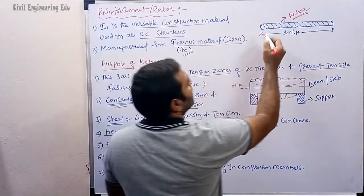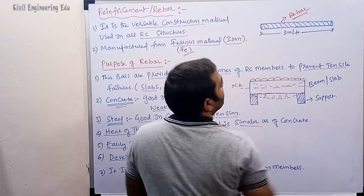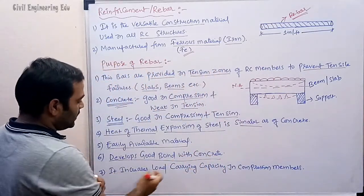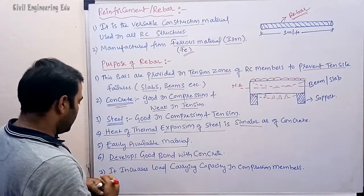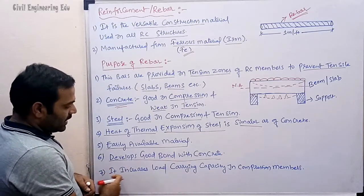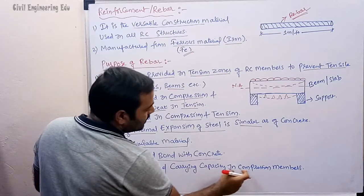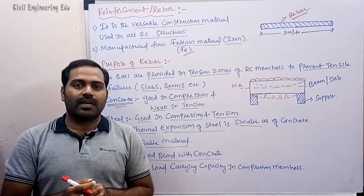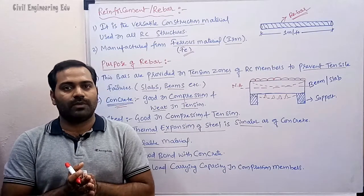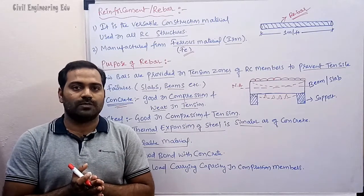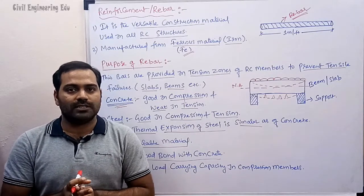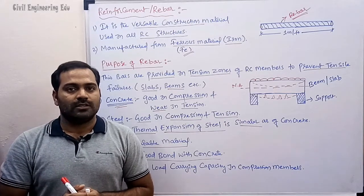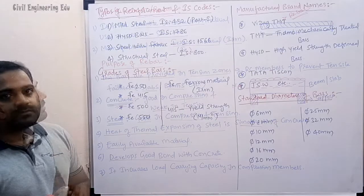Steel bars develop good bond with concrete because they have ribs, which allow proper bonding. Also, steel increases load-carrying capacity in compression members — we can decrease the size of compression members by providing steel reinforcement. These are the important reasons why we use steel bars in all RC structures.